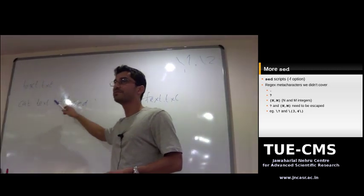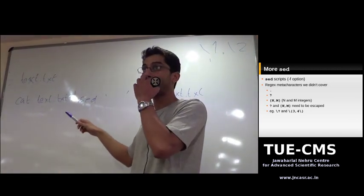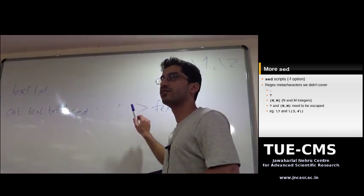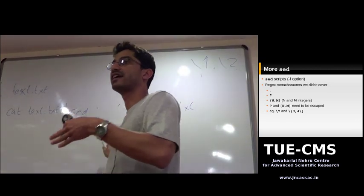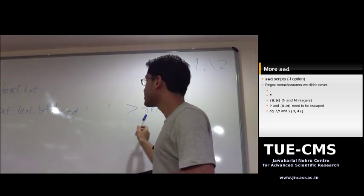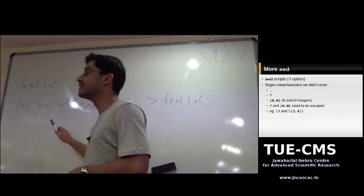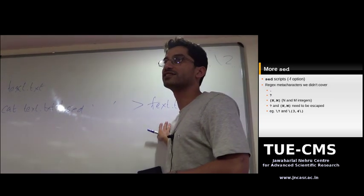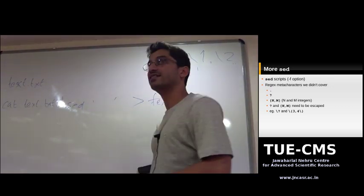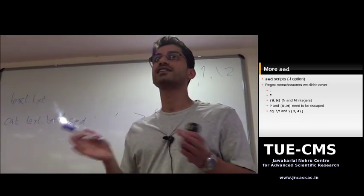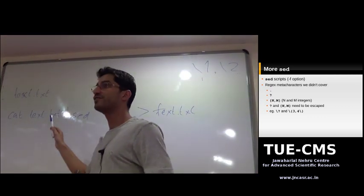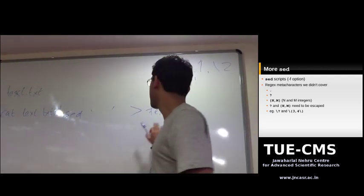Why? If the shell sees an output redirection, before it runs the command, before it does anything with the command, it's going to create that file first. Creating the file truncates it to zero length. So you lose all the data before the cat command can ever run. Your file has been reduced to zero length. This is something you need to avoid.